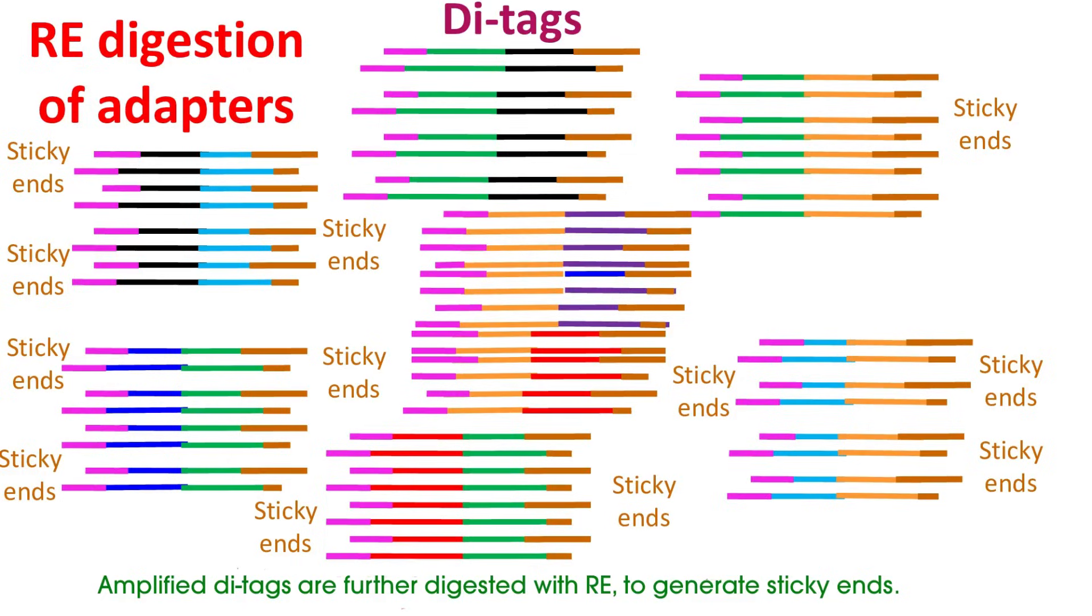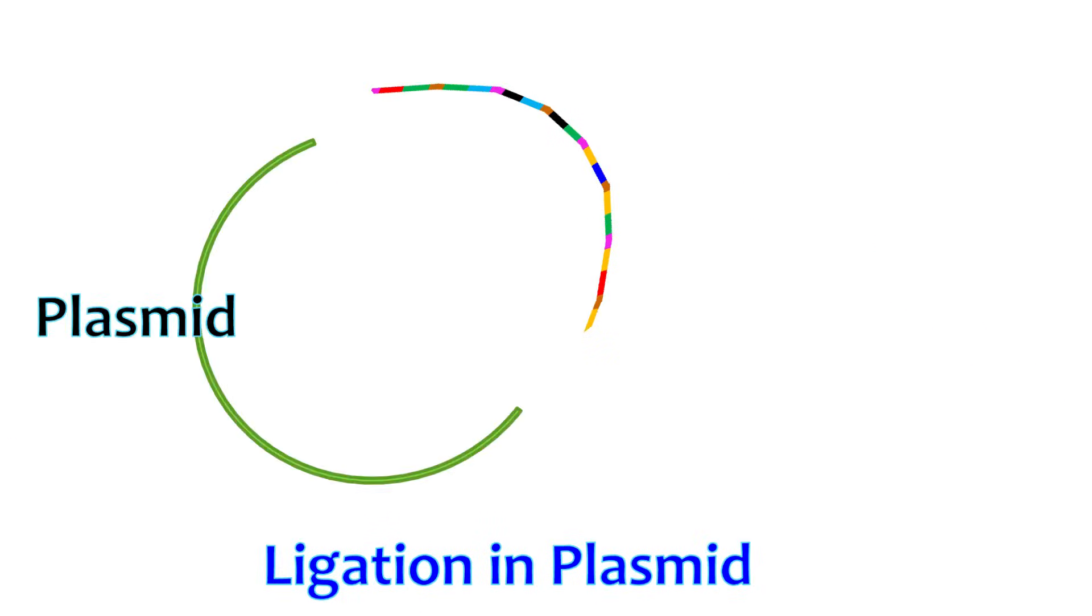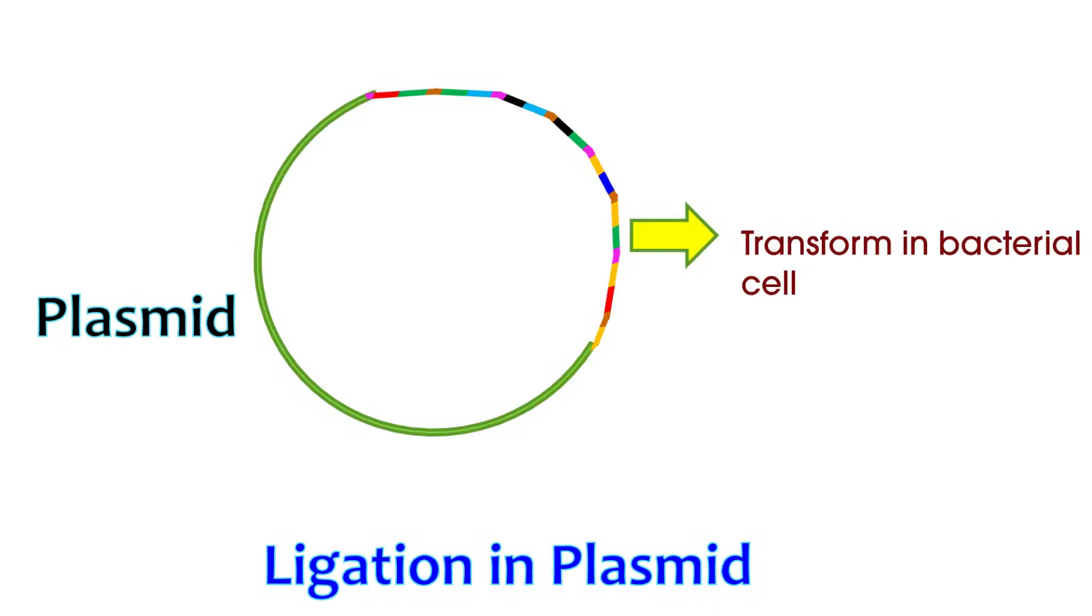The PCR amplicons are then ligated. This ligation will result in formation of long chains. This is then finally ligated into a plasmid and transformed into a cell.